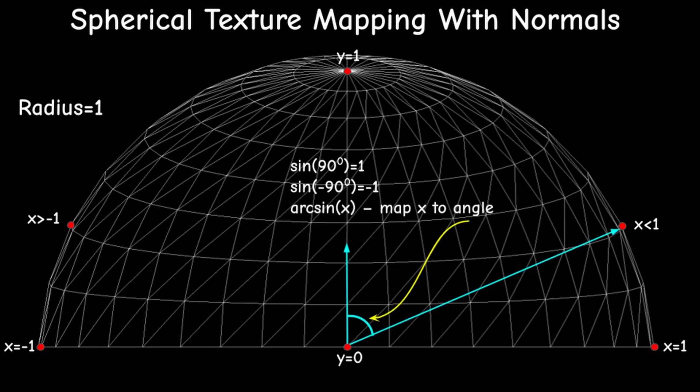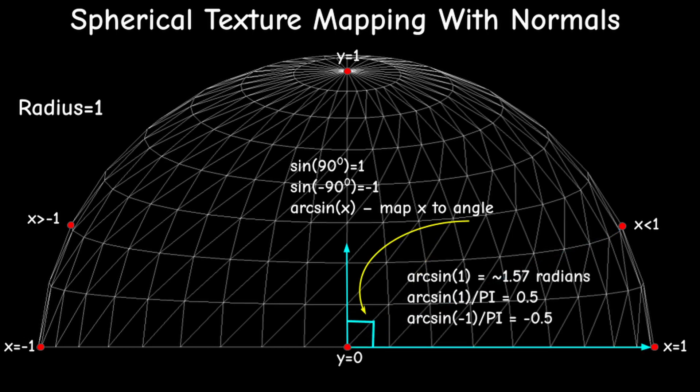Remember that the sine function of 90 degrees is 1 and for minus 90 degrees it is minus 1. We will use the reverse sine function aka arcsine to map the x component of the position vector to the original angle. The result is in radians as usual and in the case of 1 we get about 1.57. If we divide this by pi we get a half. We can do the same thing for minus 1 and get a negative half. So now all we need to do is to add a half and we've got ourselves a texture coordinate which is linearly interpolated along the face of the sphere. Y is the same of course.